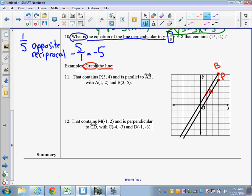So number 12 says, now we're going to have the point M, negative 1, positive 2. So this point right here is M. And it's perpendicular to CD. So C is negative 4, negative 3. And point D is negative 1, negative 3. So here is... Okay, I'm a little bit high again. So there's line CD.